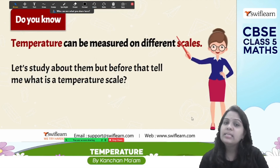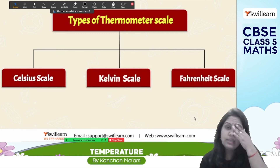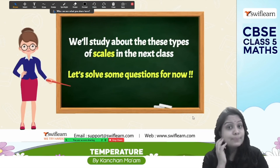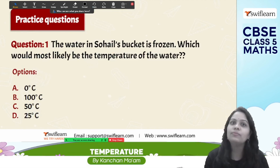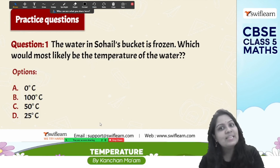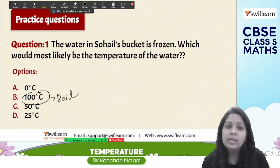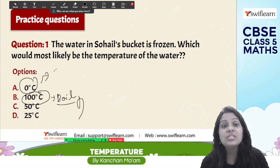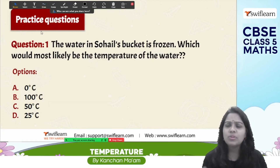There are three scales: Celsius, Kelvin, and Fahrenheit. For example, if the water in a basket is frozen like ice, which temperature is most likely? The answer is 0 degrees Celsius — because 100 degrees Celsius is the boiling point and 0 degrees Celsius is the freezing point. That is why we put ice cream in the freezer, where the temperature is lower than other parts of the fridge.